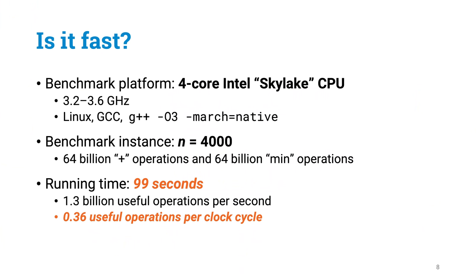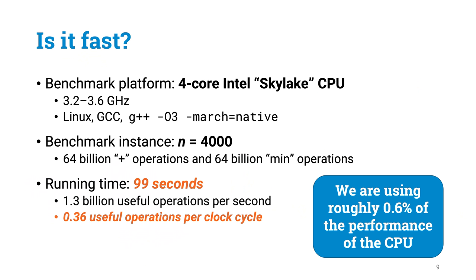And if you remember what we discussed in the previous part of this lecture, we would expect to be able to do dozens of useful operations per clock cycle using all of the possible resources that we have in these CPUs. If you check how many additions and minimum operations this specific CPU could in principle do per clock cycle, and compare it to these numbers that we get, it turns out that we are using currently less than 1 percent of the theoretical maximum performance of the CPU.